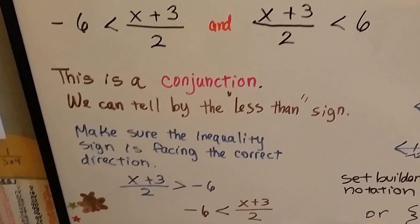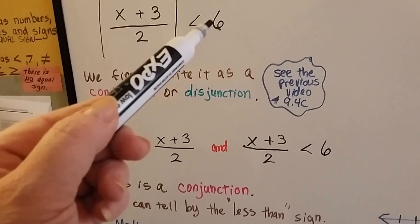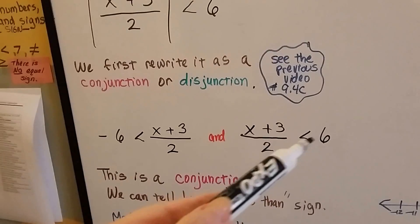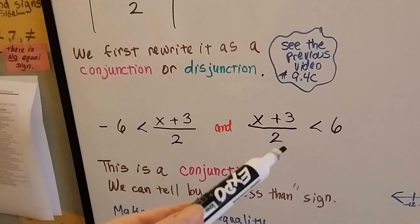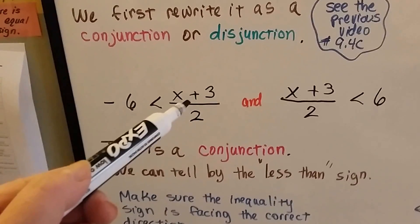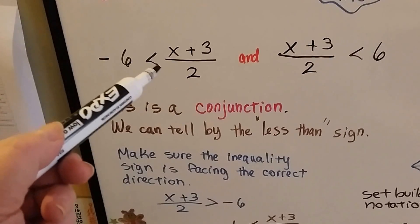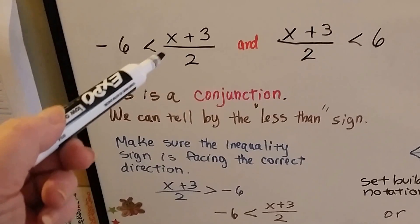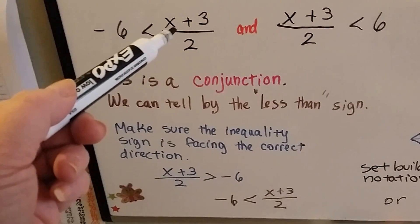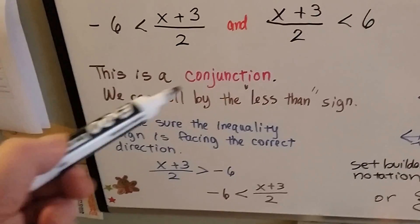Just make sure the inequality sign is facing the correct direction. So it's facing the positive 6 here. So we want it facing the positive 6 when we take the absolute value bars off. But for the negative 6, we want it to be facing the x plus 3 over 2. So it doesn't matter which way this inequality sign is facing, as long as the large open part, when it's negative, is facing the x plus 3 over 2, and the small pointy end is facing the negative number, for a conjunction.